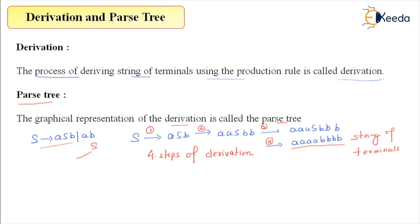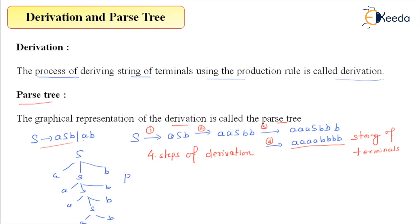S derives aSb, then aaSbb, then aaaSbbb, and finally aaabbb. This stepwise derivation can be represented graphically — that is called the parse tree.